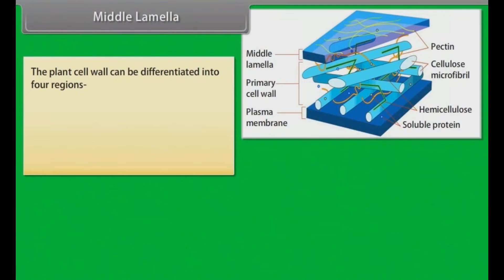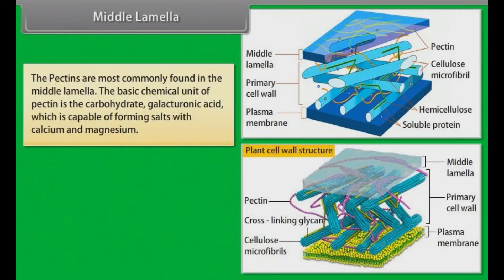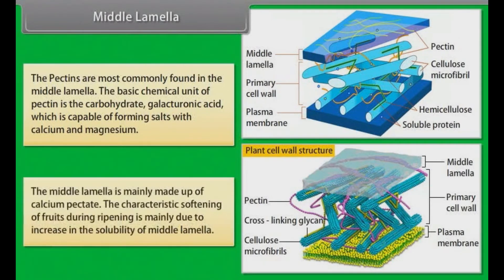Middle lamella. The plant cell wall can be differentiated into four regions: middle lamella, primary wall, secondary wall, and tertiary wall. The outermost layer, or the intercellular structure separating the walls of two adjacent plant cells, is the middle lamella. The pectins are most commonly found in the middle lamella; the basic chemical unit of pectin is the carbohydrate galacturonic acid, which is capable of forming salts with calcium and magnesium. The middle lamella is mainly made up of calcium pectate. The characteristic softening of fruits during ripening is mainly due to increase in the solubility of the middle lamella.